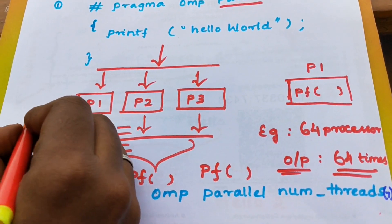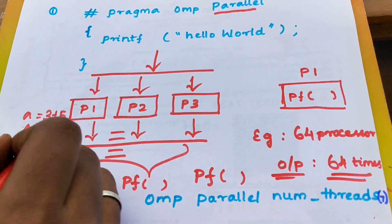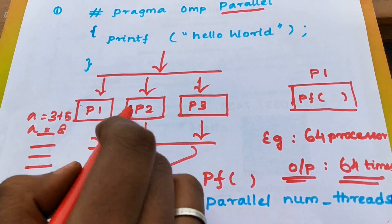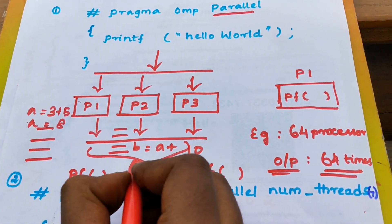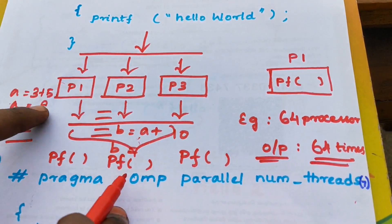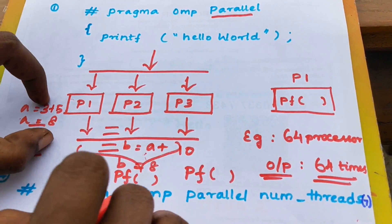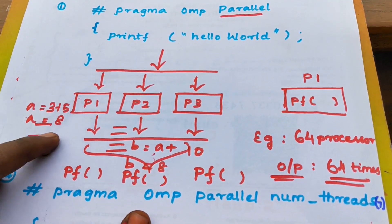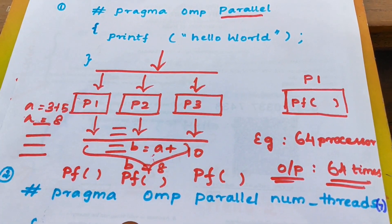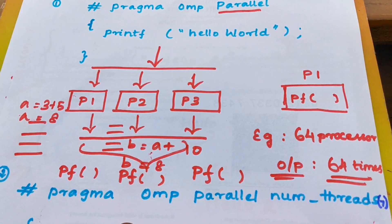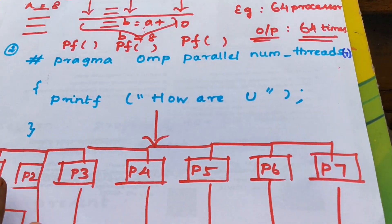For example, a value equals 3 plus 5, so a equals 8. Now P2 does b equal to a plus 10. So b equals a, and a equals 8. In this calculation we substitute the value. If we have a value, we can continue the next step. But here the processor depends on the sequential programming because P2 needs a's value first — so this is dependent, not independent.